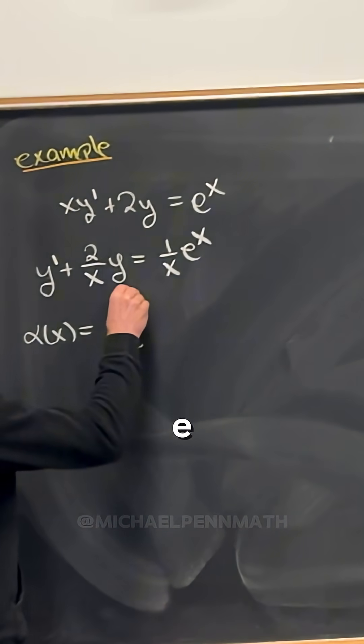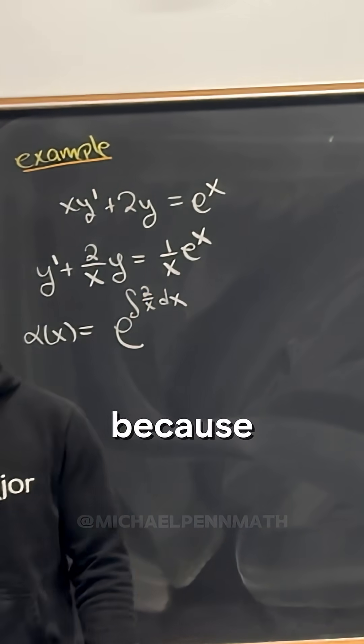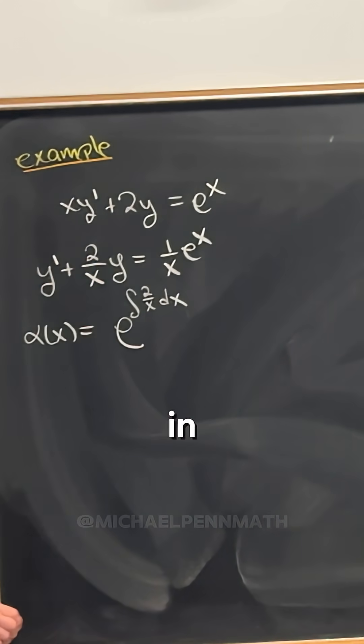And so that's going to be e to the antiderivative of 2 over x dx, because it's always the exponentiated antiderivative of the function in front of y.